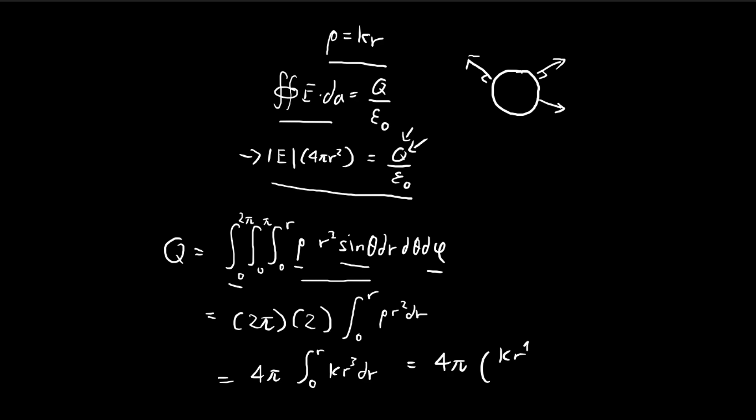Integrating that, we get kr to the power of 4 divided by 4, which is equal to π kr to the 4. So we found what Q is.